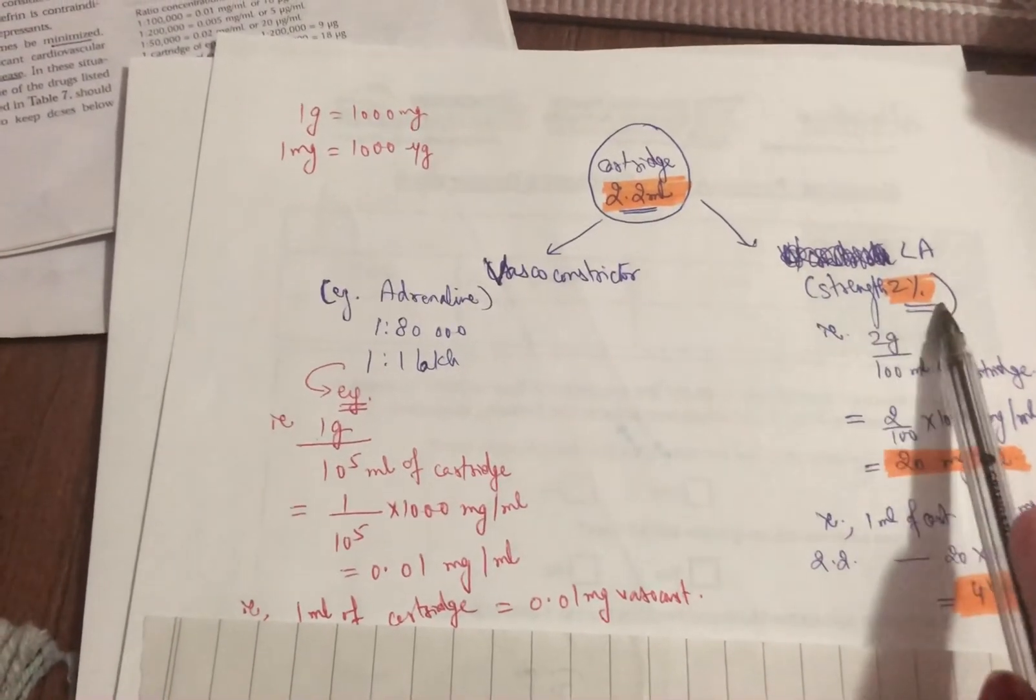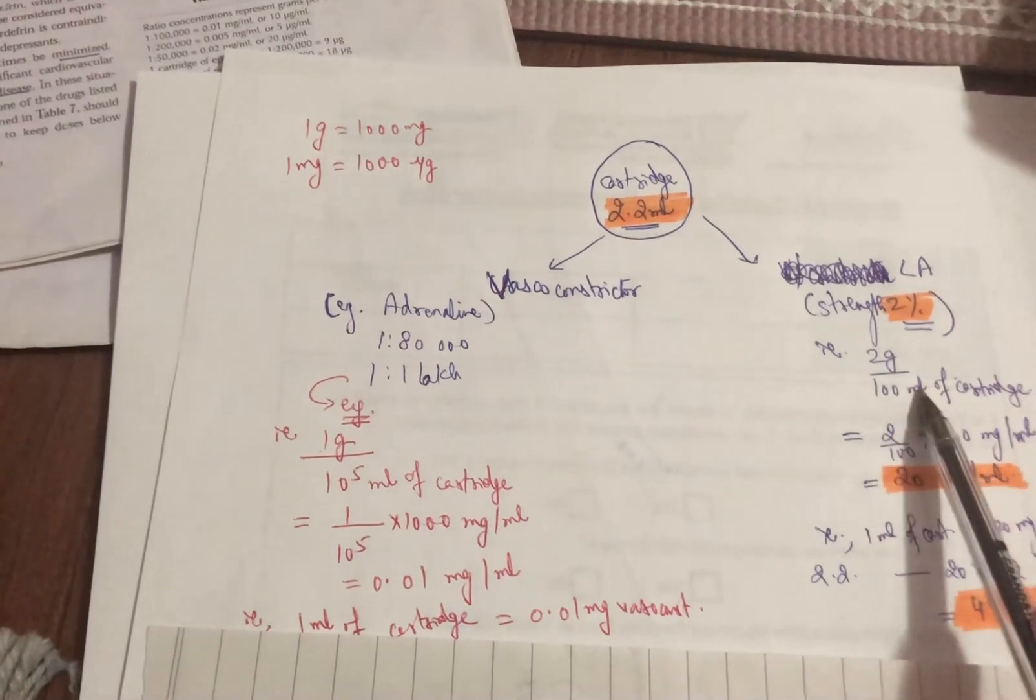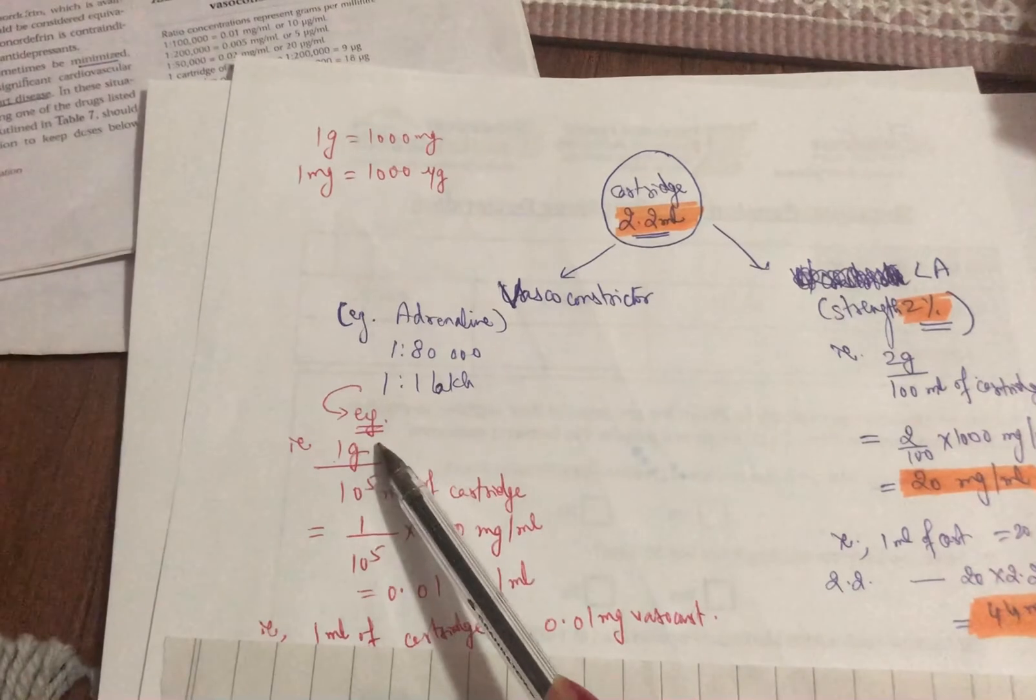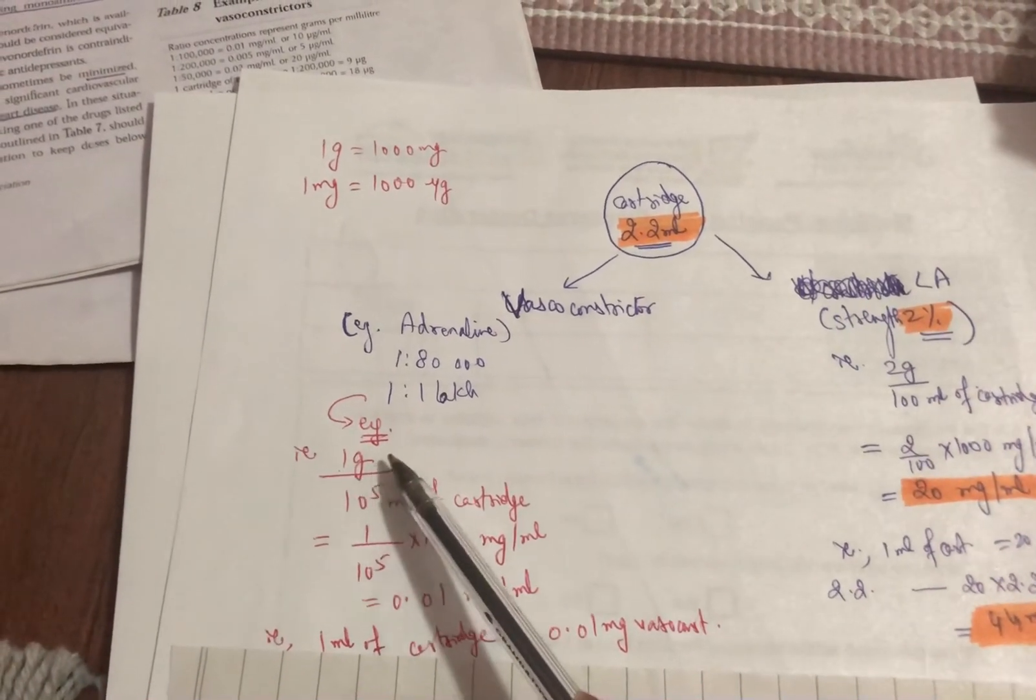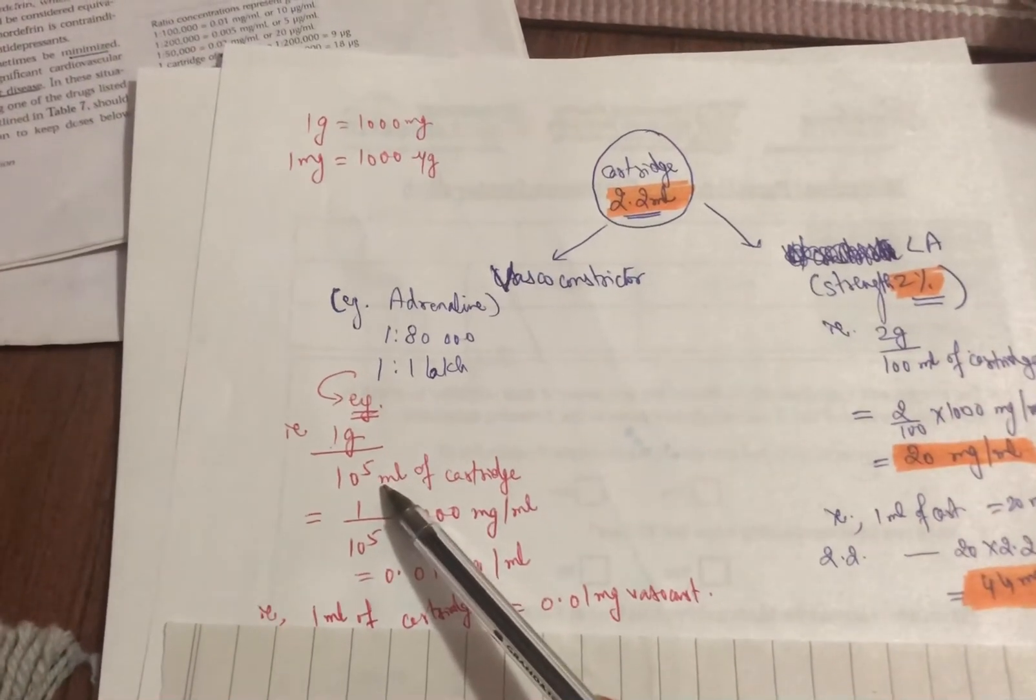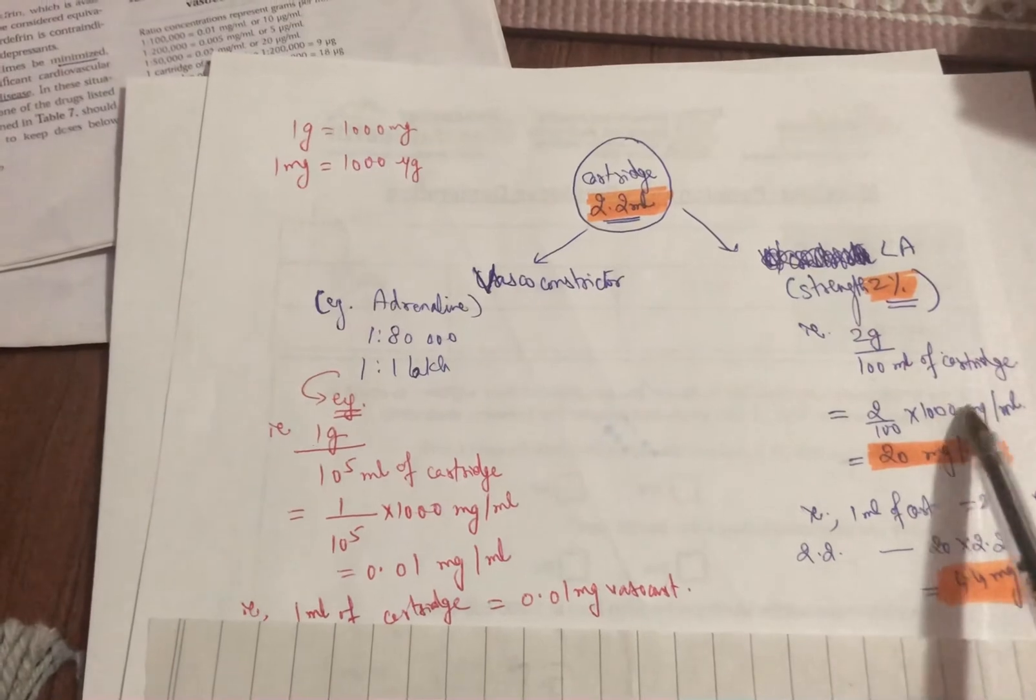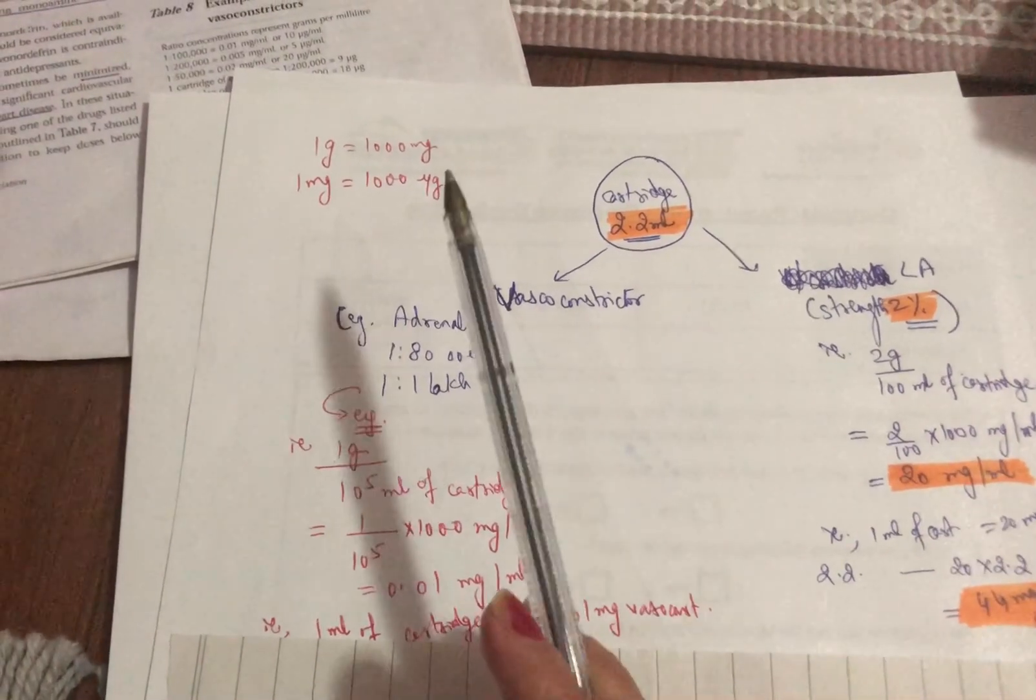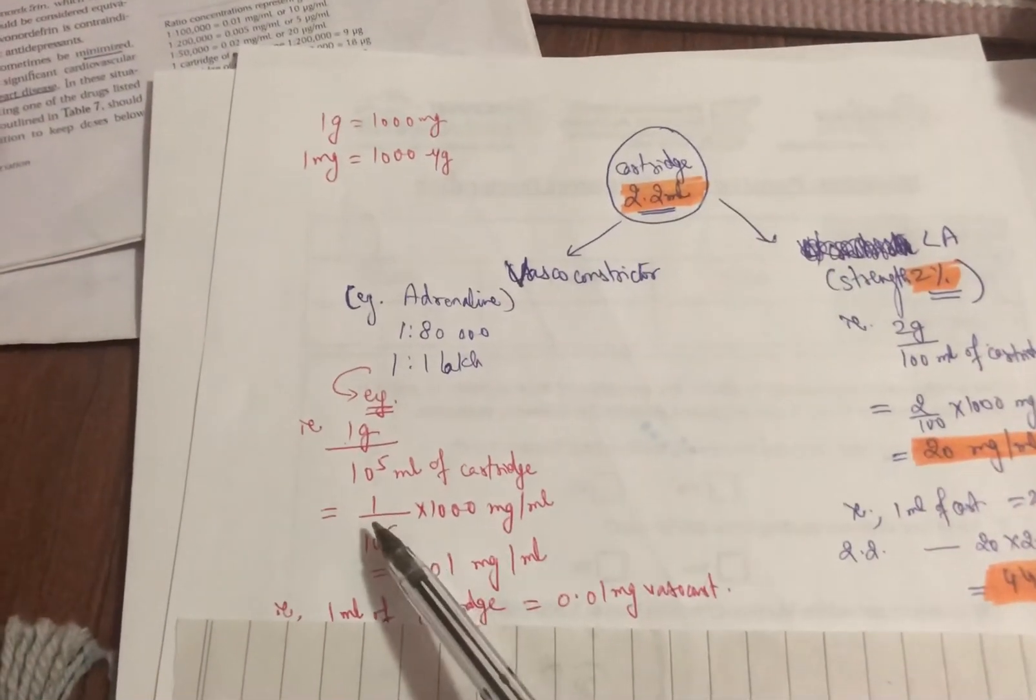When we said the strength we said 2% means 2 by 100 and the units were gram per milliliter and that's the same here. So it's 1 by 1 lakh, that is 1 by 10 raised to 5, and the units are the same gram per milliliter. So next step was we wanted to convert these grams into milligrams and we multiplied it with 1000 as 1 gram equals 1000 milligrams.